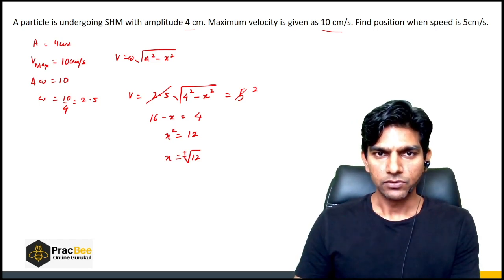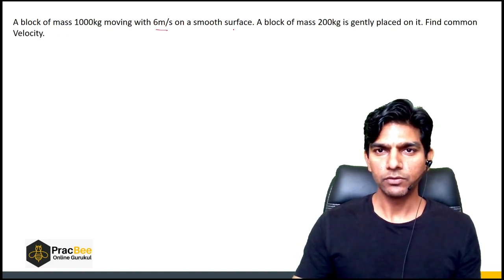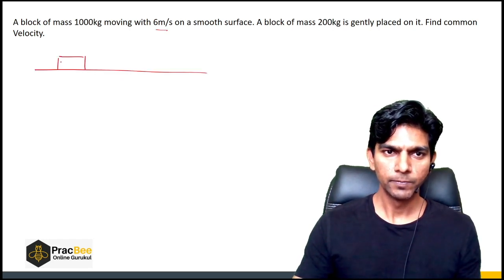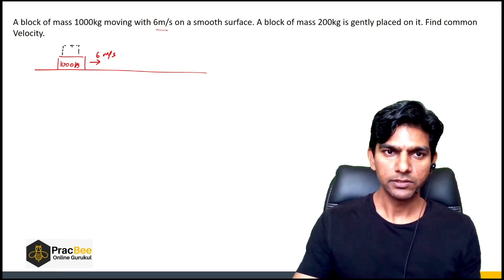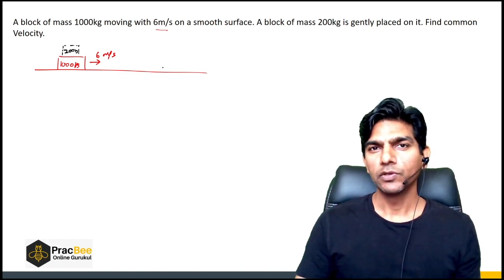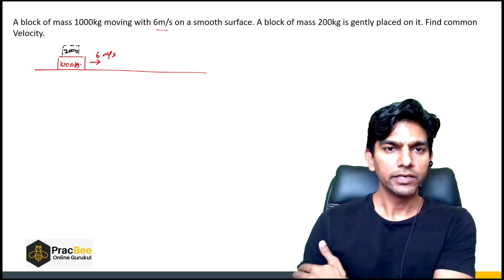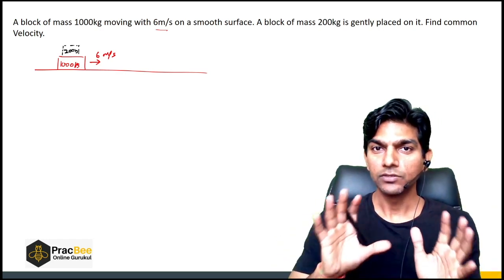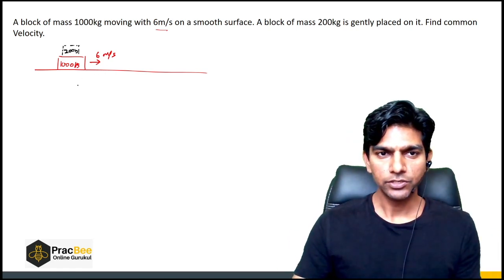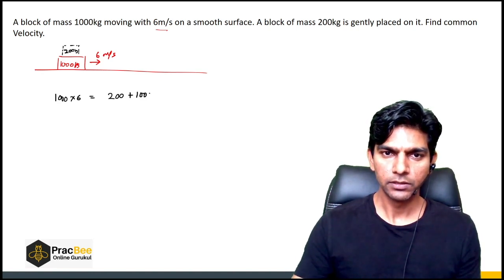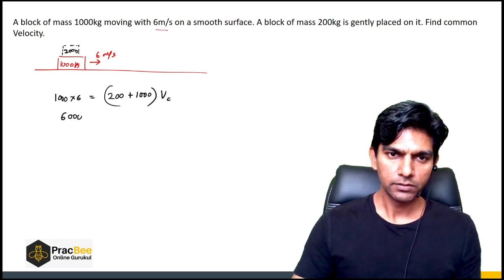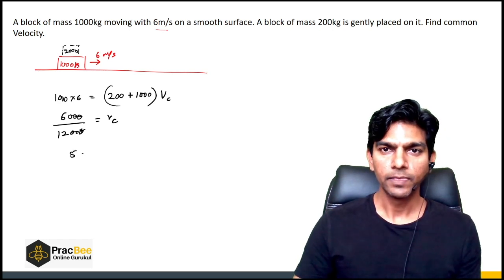Next question: a block of mass 1000 kg moving with 6 m/s on a smooth surface has a block of 200 kg gently placed over it. Find the common velocity. This is a straightforward conservation of linear momentum question. There is no external force in the horizontal direction, so initial momentum 1000 × 6 equals final momentum (1000 + 200) × v, giving v = 6000/1200 = 5 m/s.